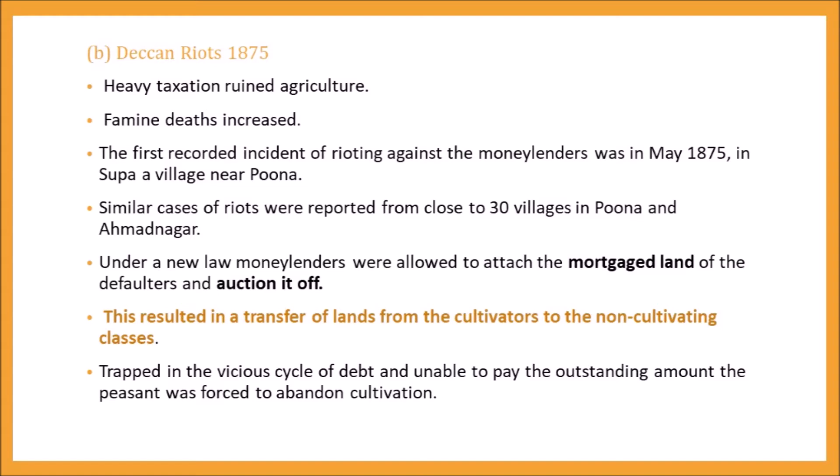Mortgaged means pledging land as security, and auction means putting it up for public sale. The peasants used to borrow money from moneylenders by using their land as collateral. So when they were unable to repay the borrowed money, the moneylenders would auction the land.